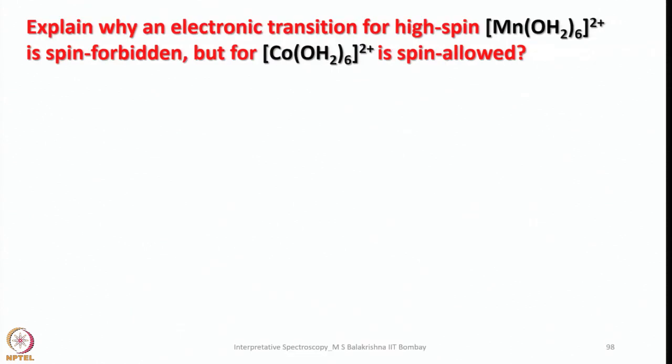Now let us look into a couple of problems. Very simple problems: explain why an electronic transition for high spin Mn2+ is spin forbidden but for cobalt 2+, d7, is spin allowed. It's very simple - you have to identify the oxidation state and the d system. In case of hexa-aqua manganese 2+, it's a d5 system. Immediately write the crystal field splitting diagram and put the electrons - you have all 5 electrons, high spin complex, so it's spin forbidden. But for cobalt, it's a d7 system. Again, high spin complex. Here it is allowed because these 2 electrons can easily go to eg level, so this is spin allowed transition.